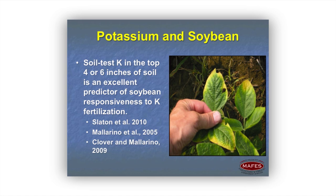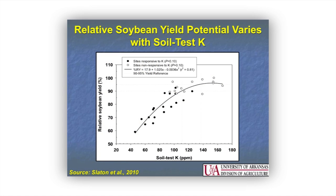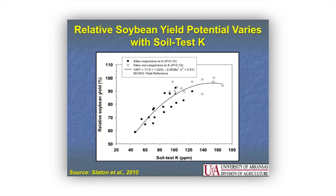What does a properly correlated soil test look like? On the y-axis we have relative soybean yield and on the x-axis we have soil test K. The black dots are sites that are responsive to potash fertilization and the white dots are non-responsive. Around 120 parts per million soil test K, anything above that, your chances of seeing a response to fertilizer decrease. With this data we can properly calibrate a rate for variable rate application or tell you an expected yield loss based on the amount of fertilizer applied.